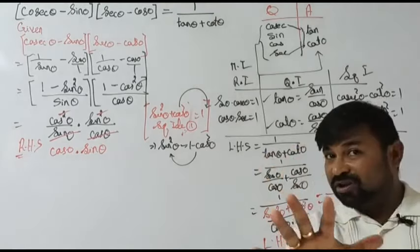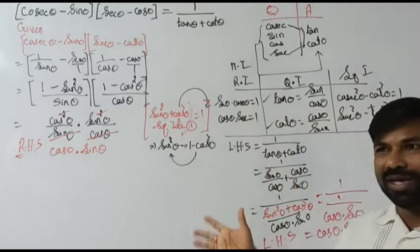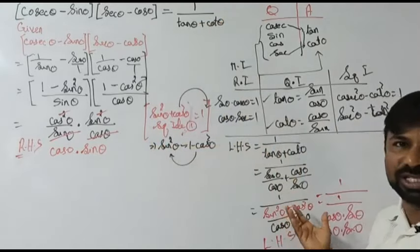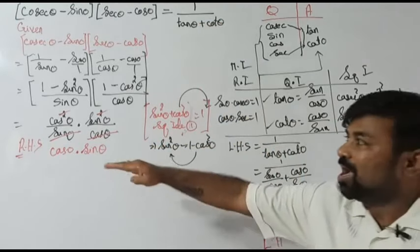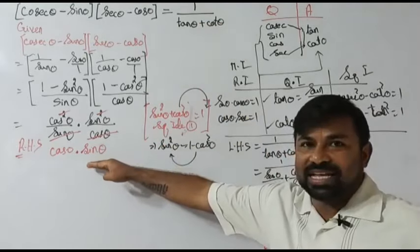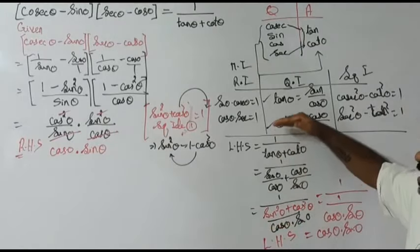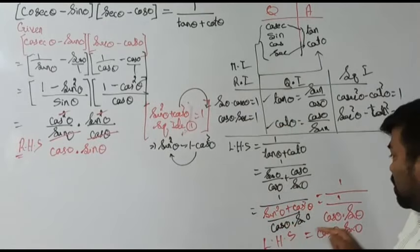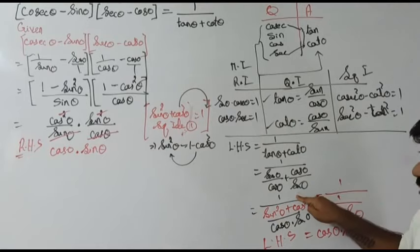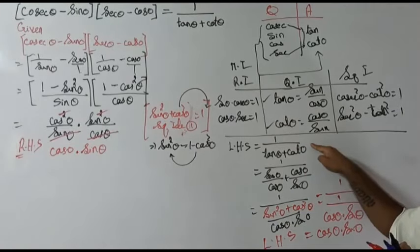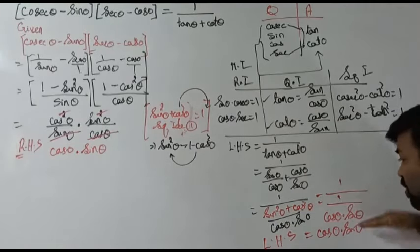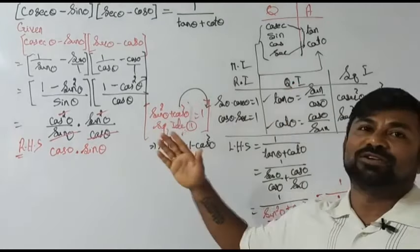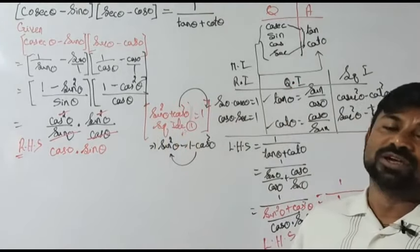If you are not satisfied with the way we are dealing — proving LHS and RHS separately — you can do one more thing: after getting this answer, start copying the steps in reverse order. Copy the structure in reverse, and that is also fine. So LHS is equal to RHS — we can see that.